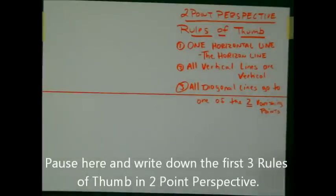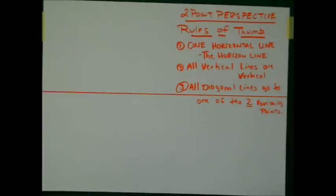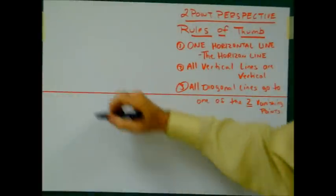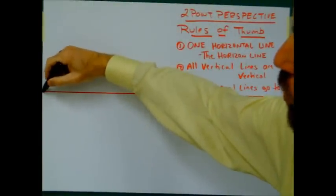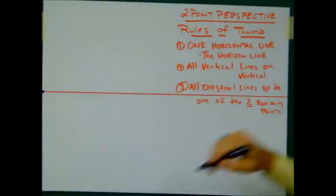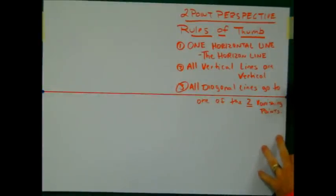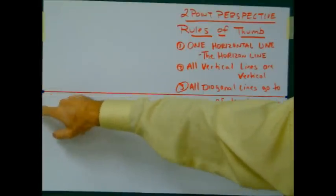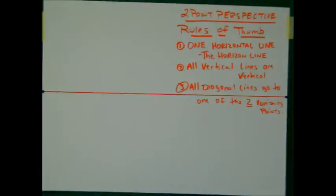Speaking of those, we're going to drop in our vanishing points right now. Generally speaking, our vanishing points are going to be way off of the picture plane. But for this exercise, we're going to put our vanishing points at the very, very edge of our picture plane — not one inch in, not two inches in, but at the very edge where the paper and the table meet. So the diagonal lines are going to recede to the vanishing point.